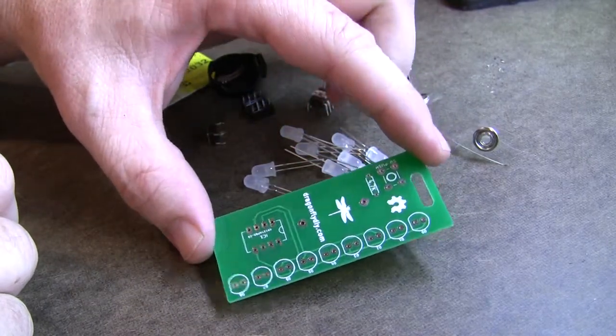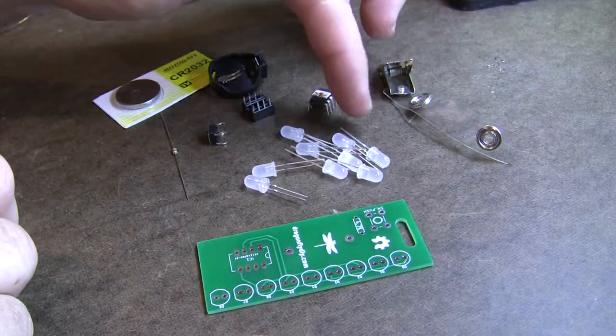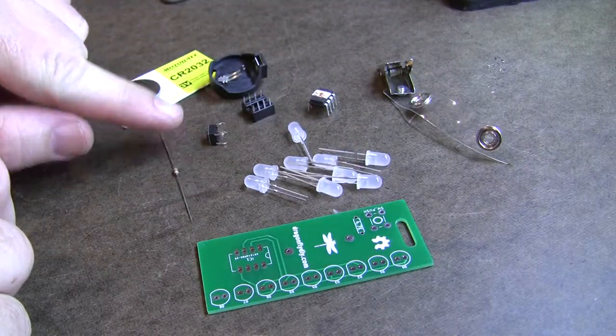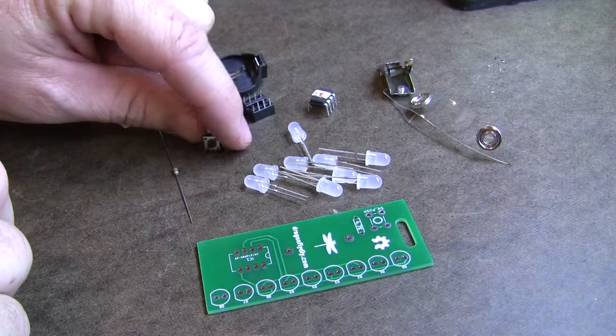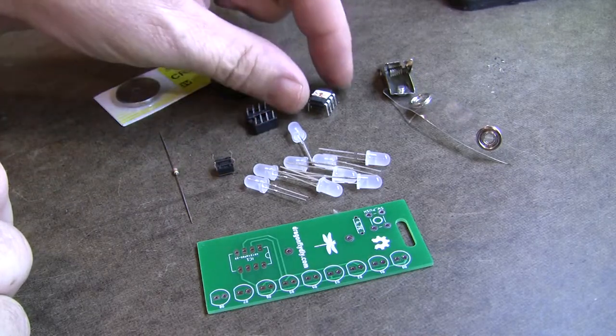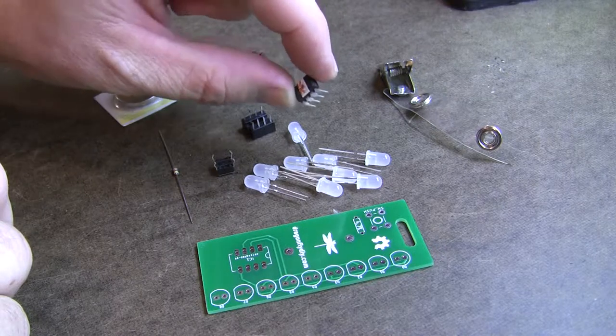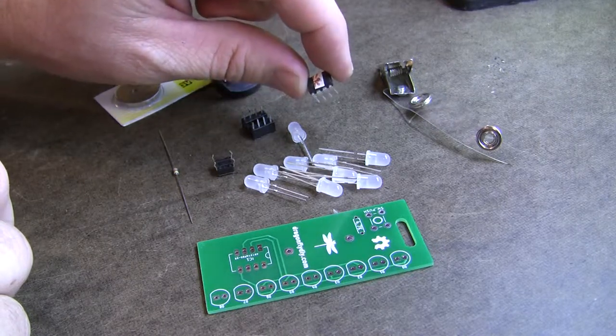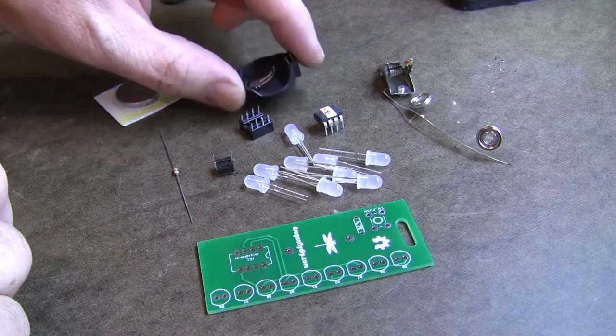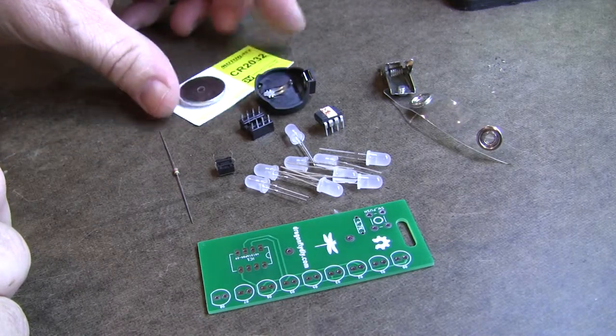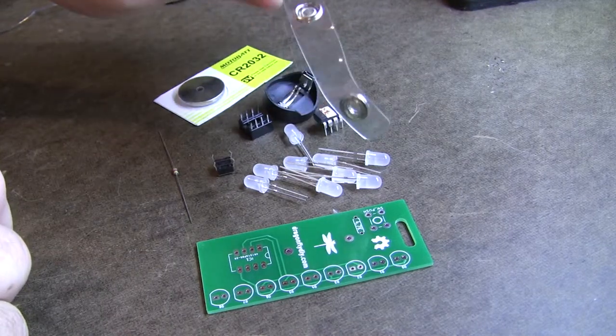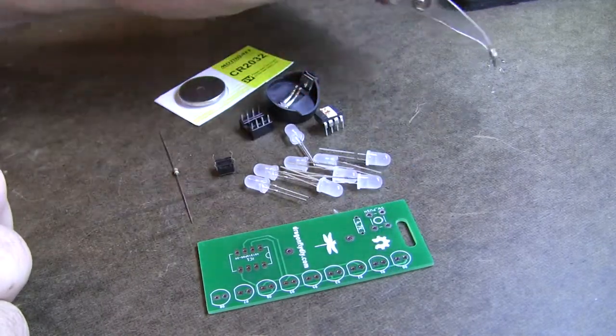You should have gotten the main circuit board, 9 LEDs, a resistor, a little tactile switch, an IC socket, the pre-programmed ATtiny85 processor, battery socket, battery, and a little clip that you hang it from.